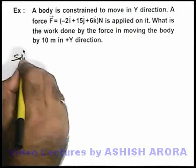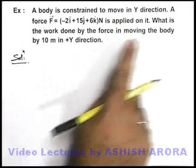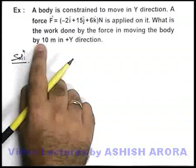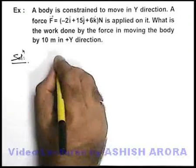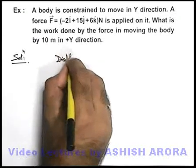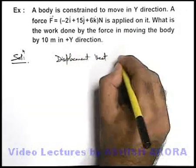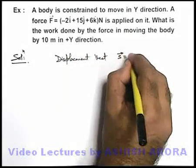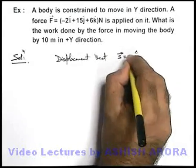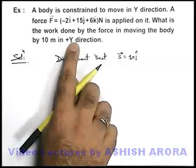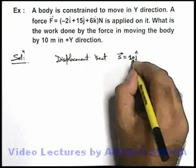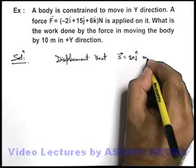Let's see the solution. Here we can simply see the body is displaced by 10 meter in plus Y direction. So here displacement vector can be directly written as s vector is equal to 10j cap, because body is displaced in plus Y direction by 10 meter, so it is +10j cap in meters.